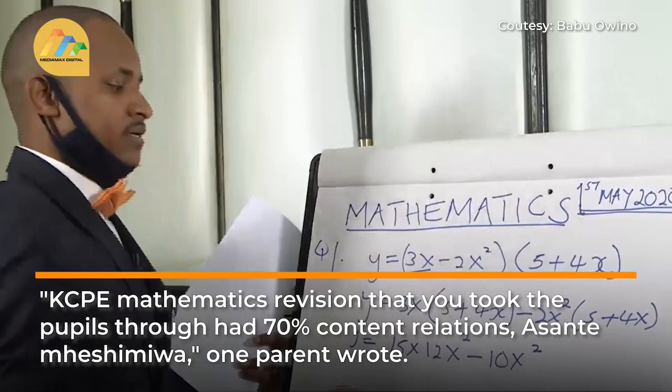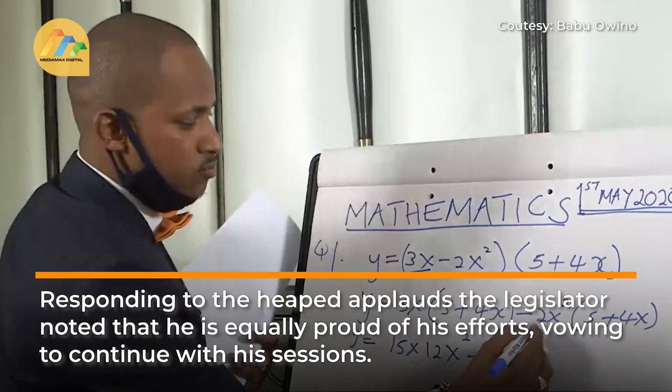Then minus 2x squared times plus 4x. We get 2 times 4 is 8. That is minus 8.